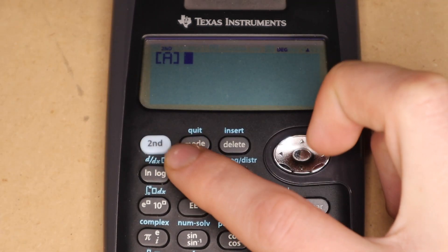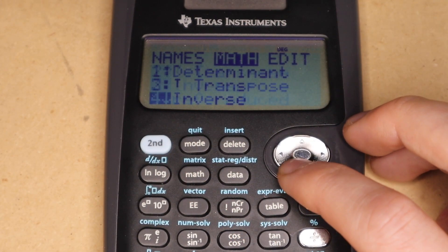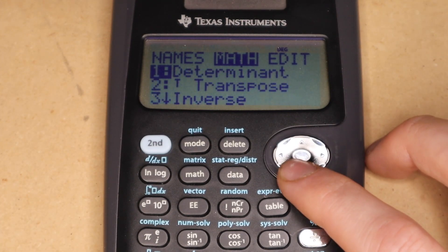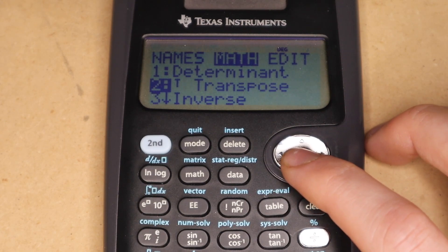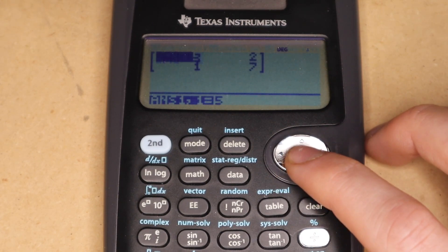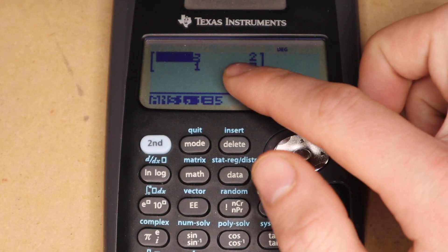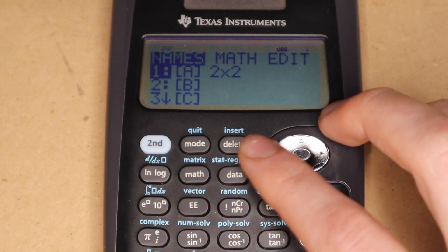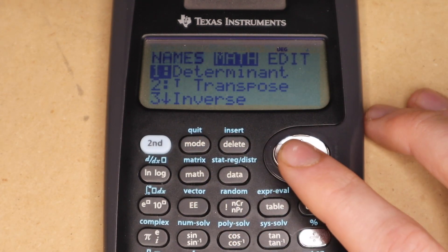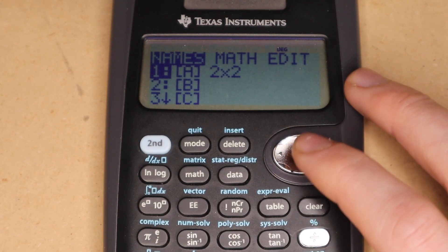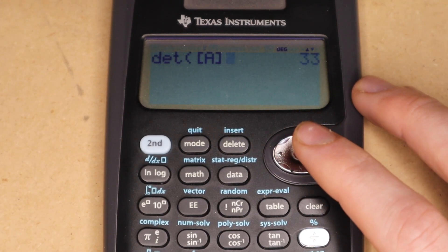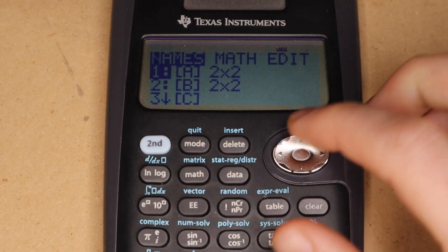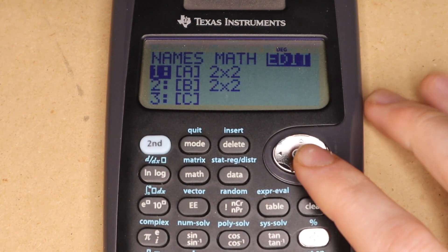So you can either grab any of these built-in operations. So if I wanted the transpose of that matrix, I would just select 2 for transpose here and then press enter and it will give me the transpose of my matrix A. Or if I want the determinant of that matrix, I go back into the matrix menu, select determinant, go back to the matrix menu again, select matrix A, and then press enter. And it will give me the determinant of matrix A.